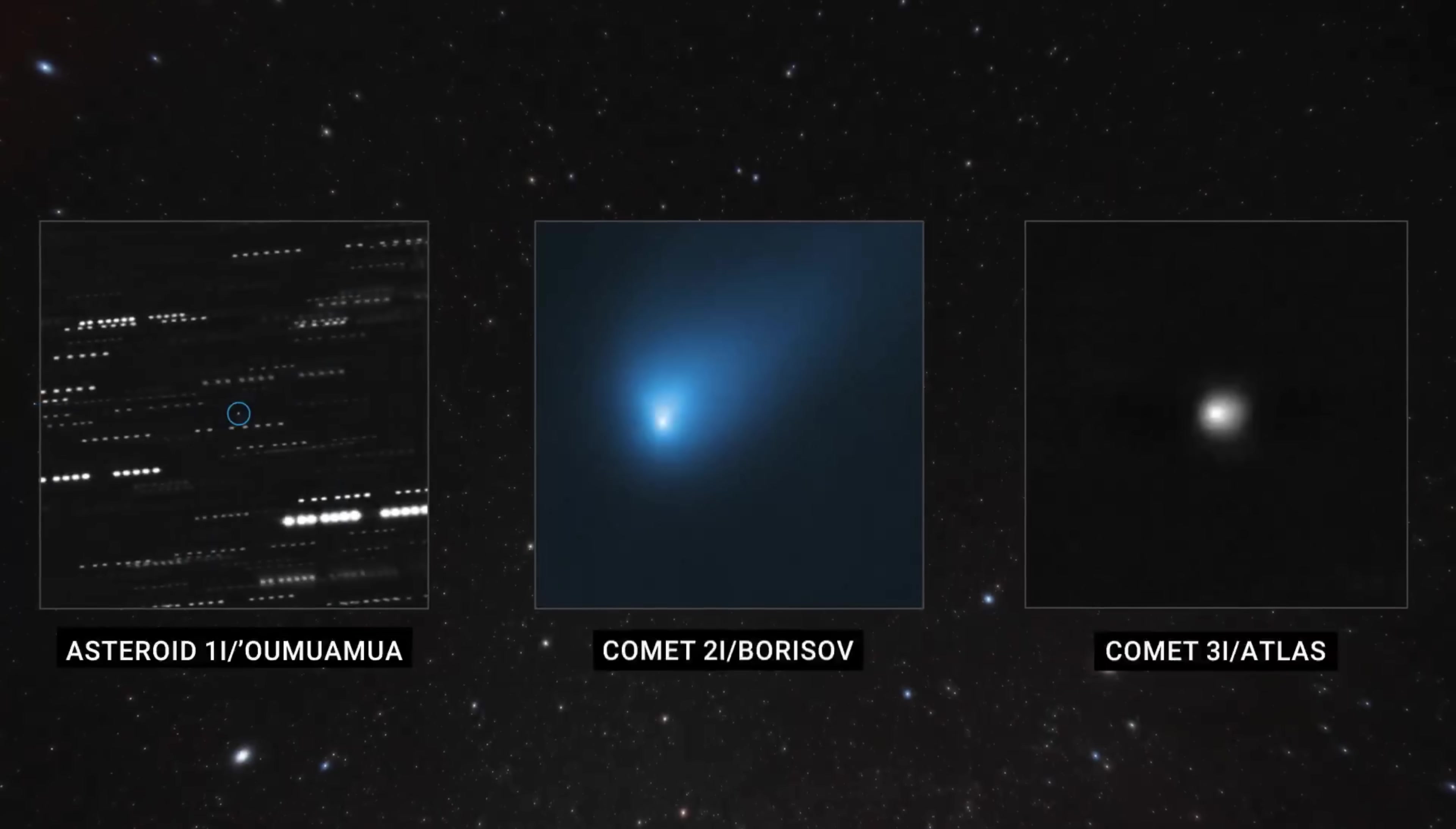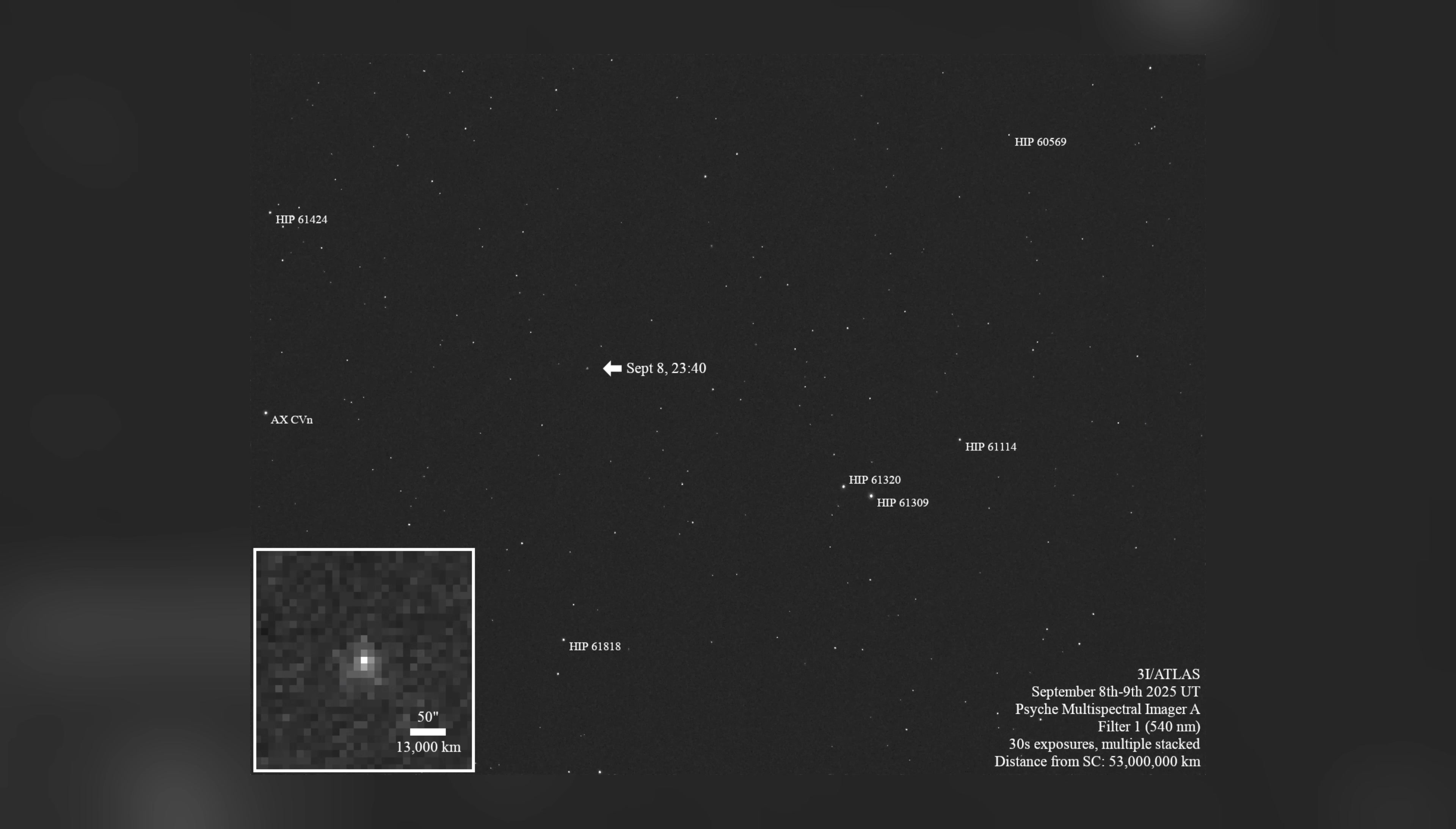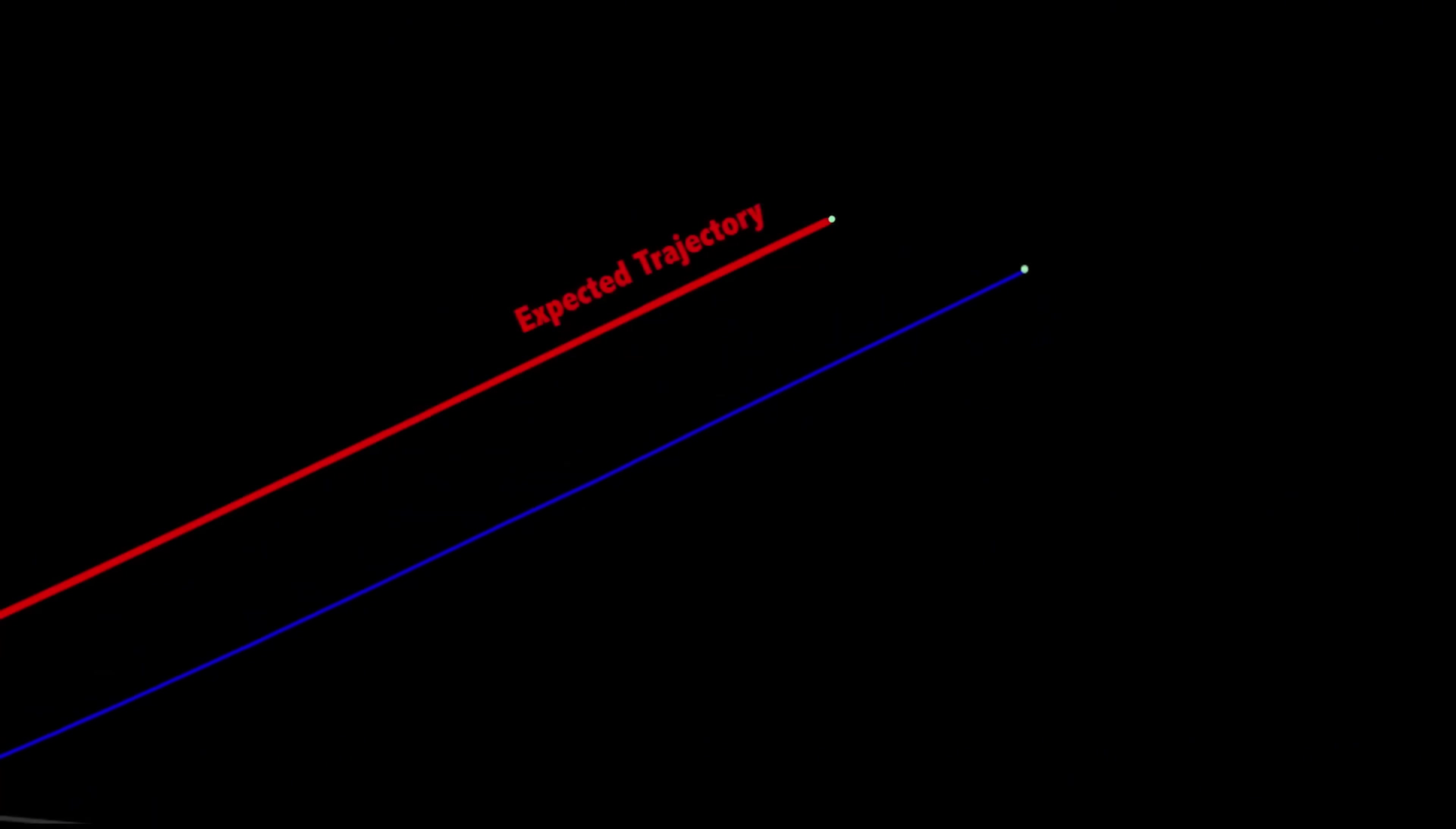Unlike its predecessors, Oumuamua and 2I/Borisov, 3I/ATLAS offered a Goldilocks opportunity. It was brighter and closer than Borisov, yet displayed more predictable behavior than the enigmatic Oumuamua. However, the shadow of Oumuamua loomed large over the mission planning. That first visitor had displayed anomalous acceleration without visible gas jets, a trait that led reputable scientists to seriously consider the possibility of a light sail or an artificial craft.